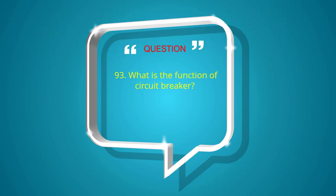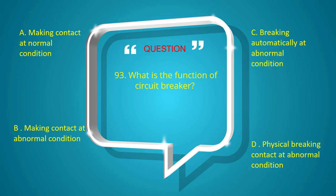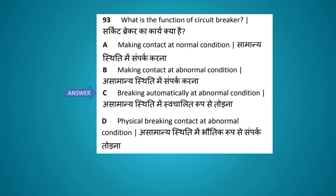What is the function of a circuit breaker? Options: making contact at normal condition, making contact at abnormal condition, breaking automatically at abnormal condition, physical breaking contact at abnormal condition. The answer is breaking automatically at abnormal condition.